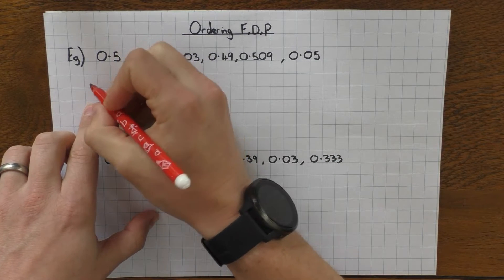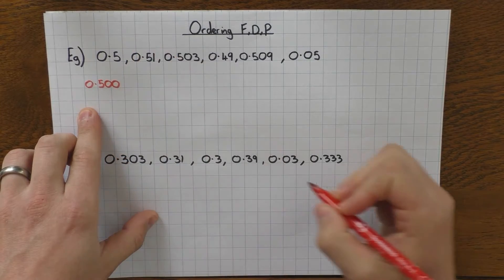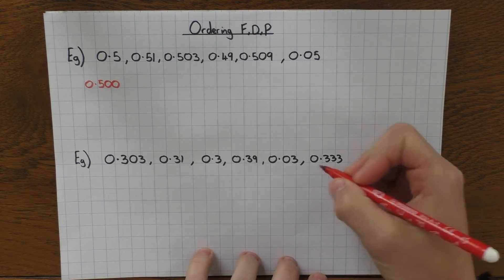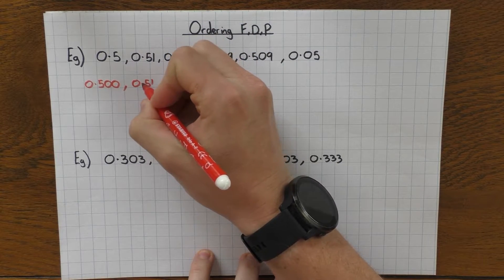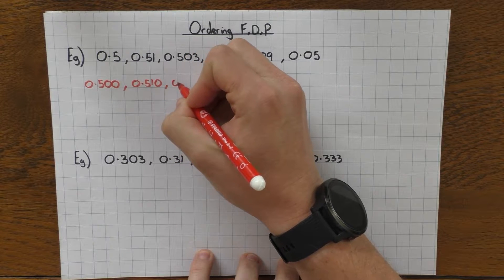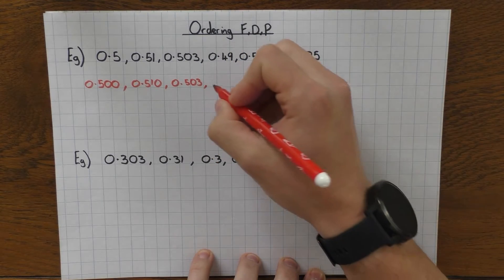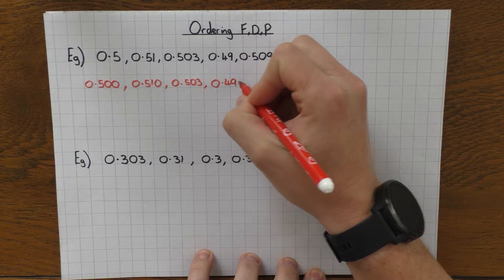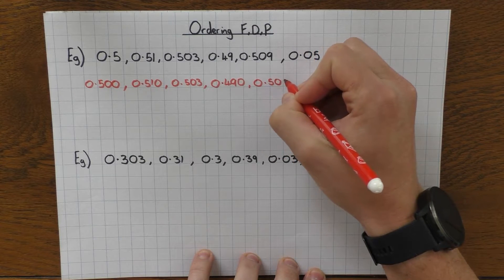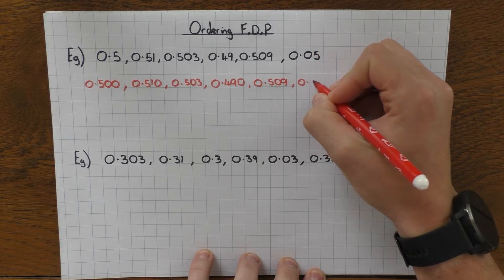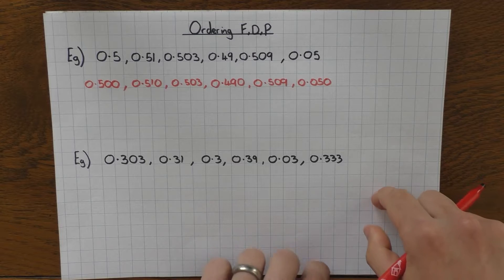All I'm going to do is make all of them three decimal places. So let's start with 0.5 - I'm going to keep my 0.5 and add two zeros so it becomes a three decimal place number. Same thing with 0.51, I'm just going to add a zero. The 0.503 is already three decimal places so I can leave that. Then 0.49 - I'm going to add a zero. And the last one, 0.05 - add a zero to make it three decimal places.